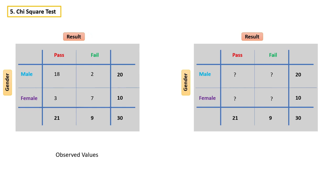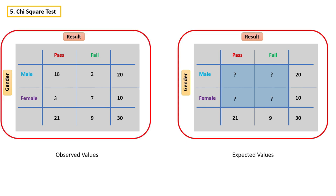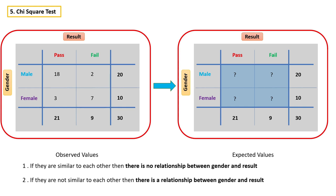Let me show you what I mean by that. Let's try to create a new table where all the values will be evenly distributed. These evenly distributed values are called expected values. The idea is: if we know how the table would look if there is no relationship between gender and result, then we can compare any table with this table and make a decision. For example, if they are similar to each other, then there is no relationship; or if they are not similar, then there is a relationship.